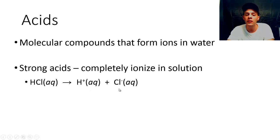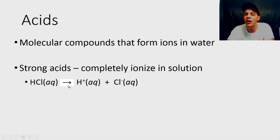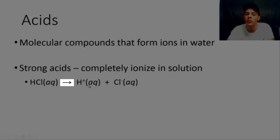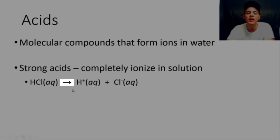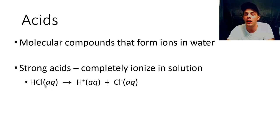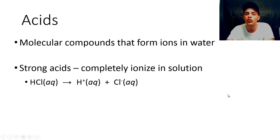When you put hydrochloric acid in water, even though it's a molecular compound, it breaks up into H⁺ ions and Cl⁻ ions — hydrogen ions and chloride ions. Notice that there's a single-headed arrow separating the reactants from the products; this indicates a complete dissociation into ions, meaning all of the HCl has dissolved and broken up into H⁺ and Cl⁻. Strong acid, complete dissociation.